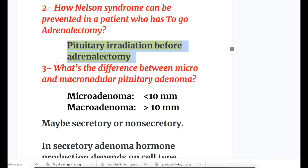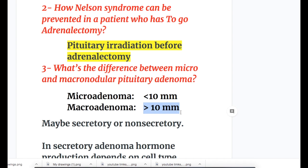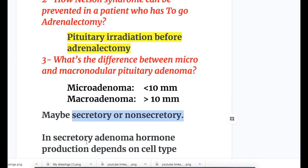Number three: what's the difference between micro and macroadenoma of the pituitary? Microadenomas are less than 10 millimeters and macroadenomas are more than 10 millimeters. They may be secretory or non-secretory. In secretory adenomas, hormone production depends on the cell type.